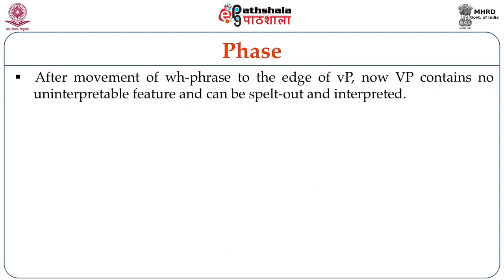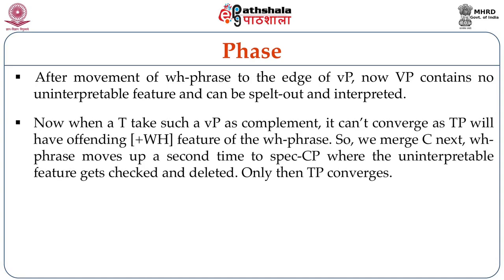After movement of the WH-phrase to the edge of little vP, big VP contains no uninterpretable feature and this chunk can be spelled out and interpreted. Now, when a finite T head takes such a little vP as complement, it cannot converge because TP now has the offending plus WH feature of the WH-phrase. So we merge the C head next, and the WH-phrase moves up a second time to the specifier of CP, where the uninterpretable feature gets checked and deleted.